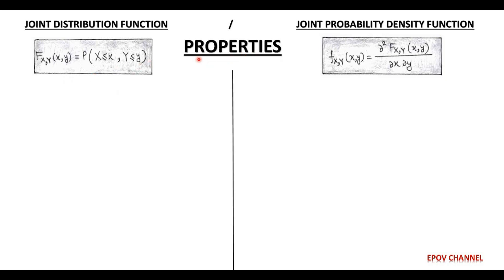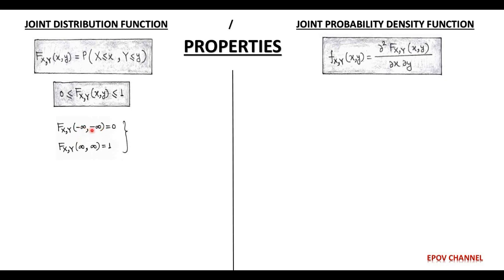Next we discuss the properties of joint CDF and joint PDF. The CDF is bounded between 0 and 1, so similarly the joint distribution function is also bounded between 0 and 1: capital F(x, y) is greater than or equal to 0 but less than or equal to 1. When both x and y tend to minus infinity, the value of the joint distribution function equals 0, but for plus infinity its value is unity, the same as for the single-variable CDF.